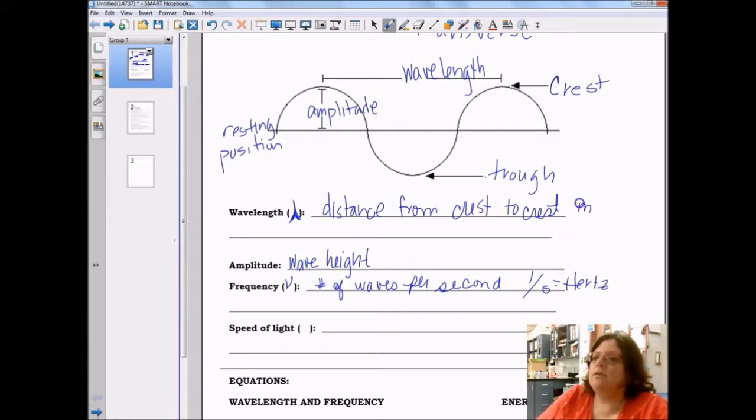The unit for wavelength is meters, although sometimes we will have it in nanometers.